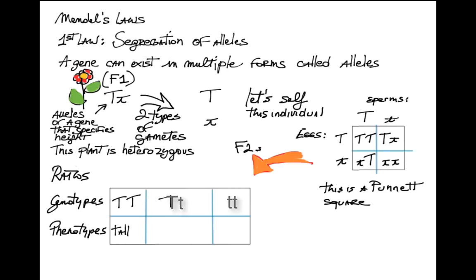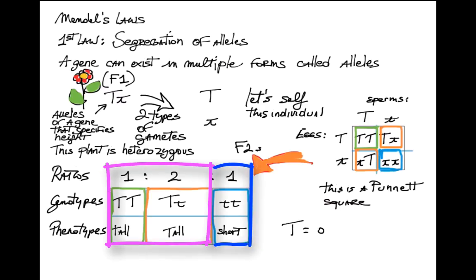Little t, to which correspond two phenotypes, tall and short. The ratio is therefore 1 to 2 to 1 for genotypes and 3 to 1 for phenotypes.